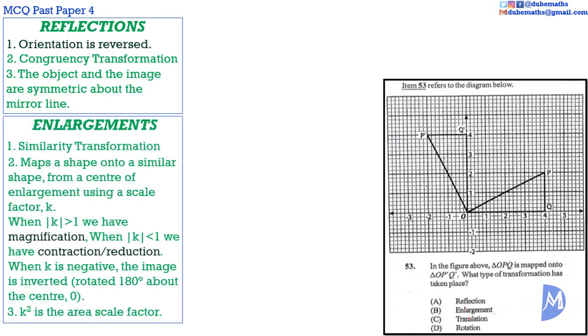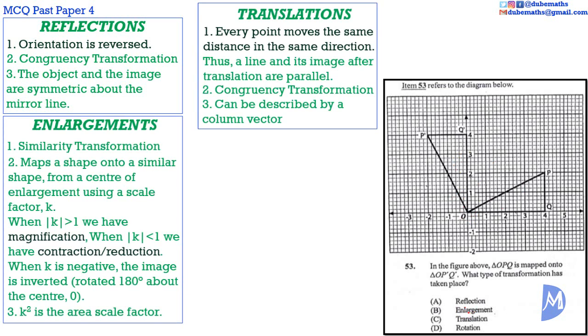The transformation is not a translation because each vertex is not moved the same distance in each direction. For instance, O doesn't move, but P moves and Q moves. It's a rotation.